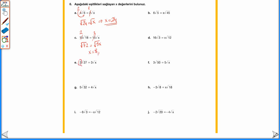2√27 = 3√x: 2'yi içine alırken 4 × 27 = 108 → √108; 3'ü içine alırken √(9x). 108 = 9x → x = 12 olarak buluruz.